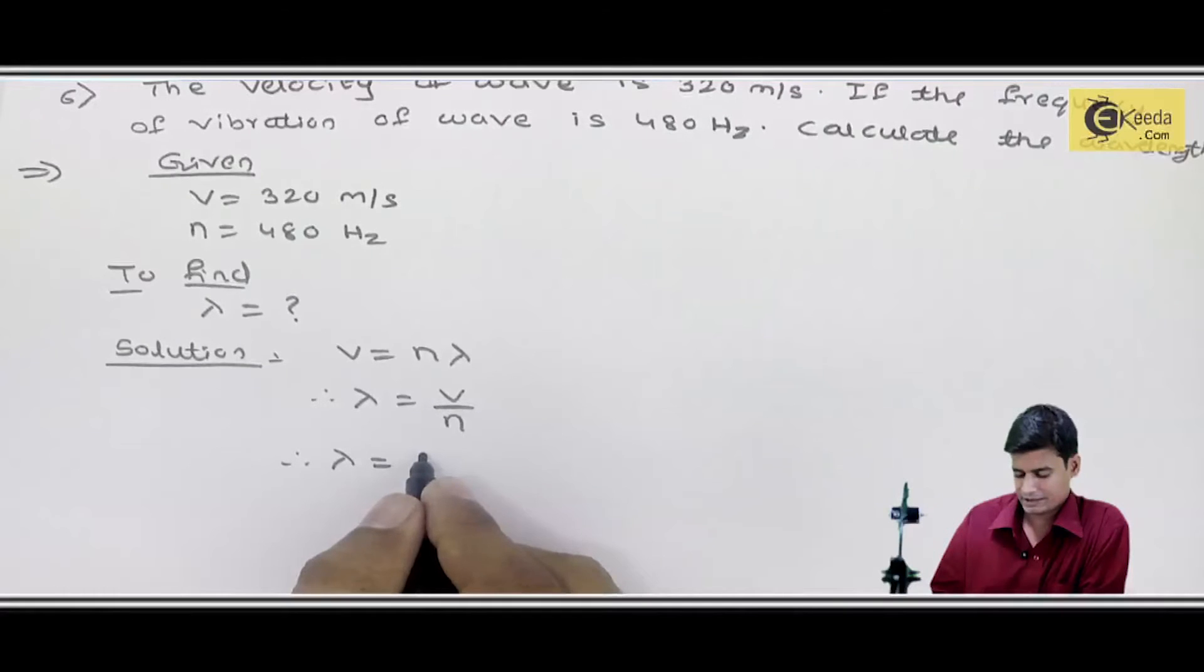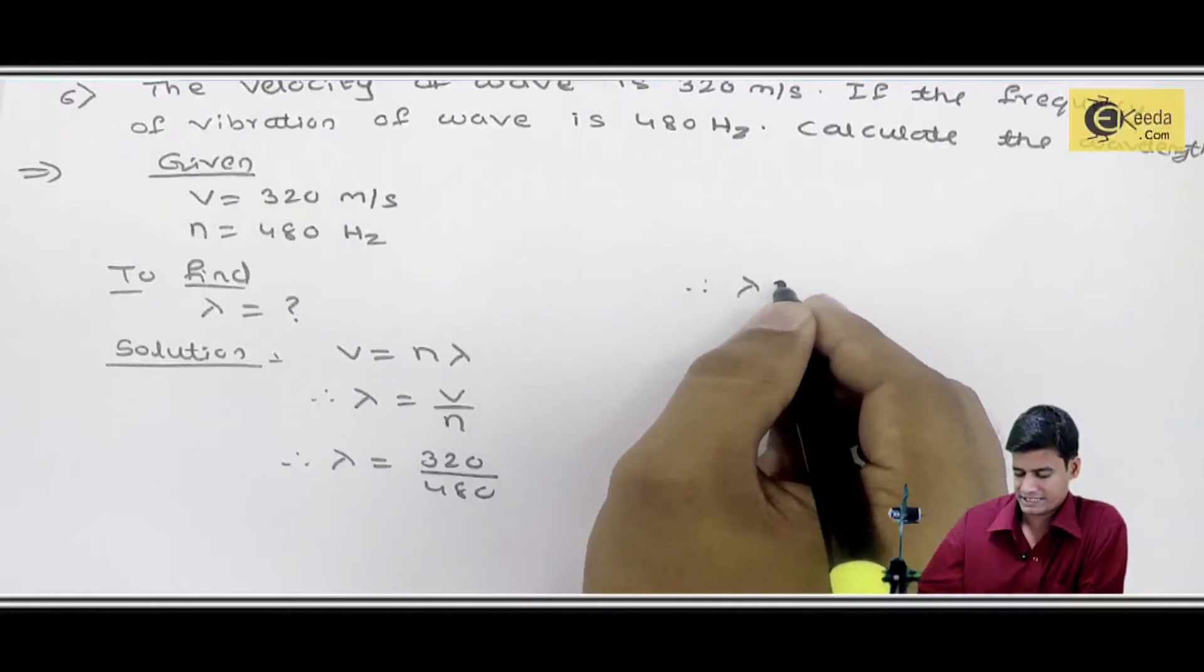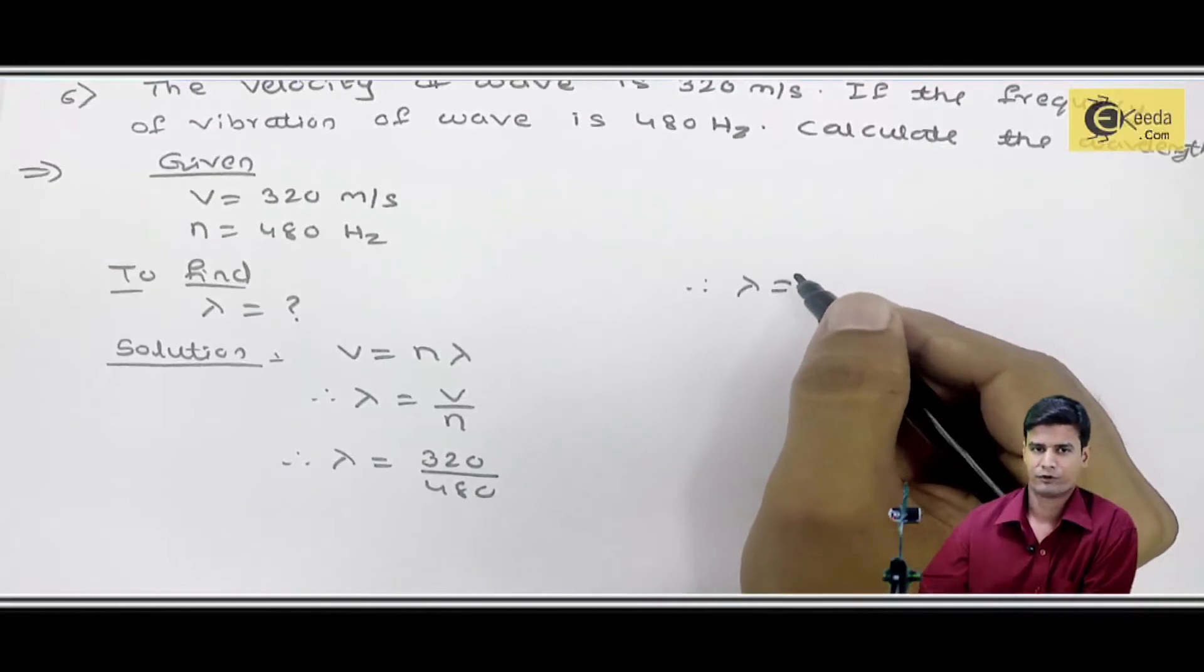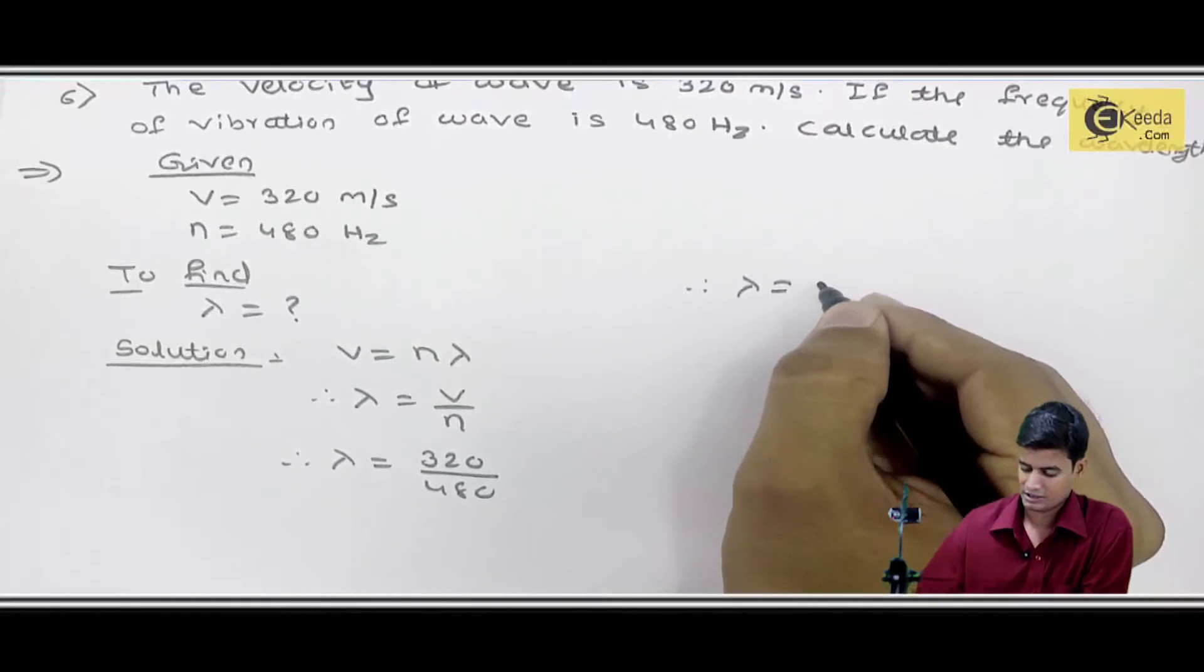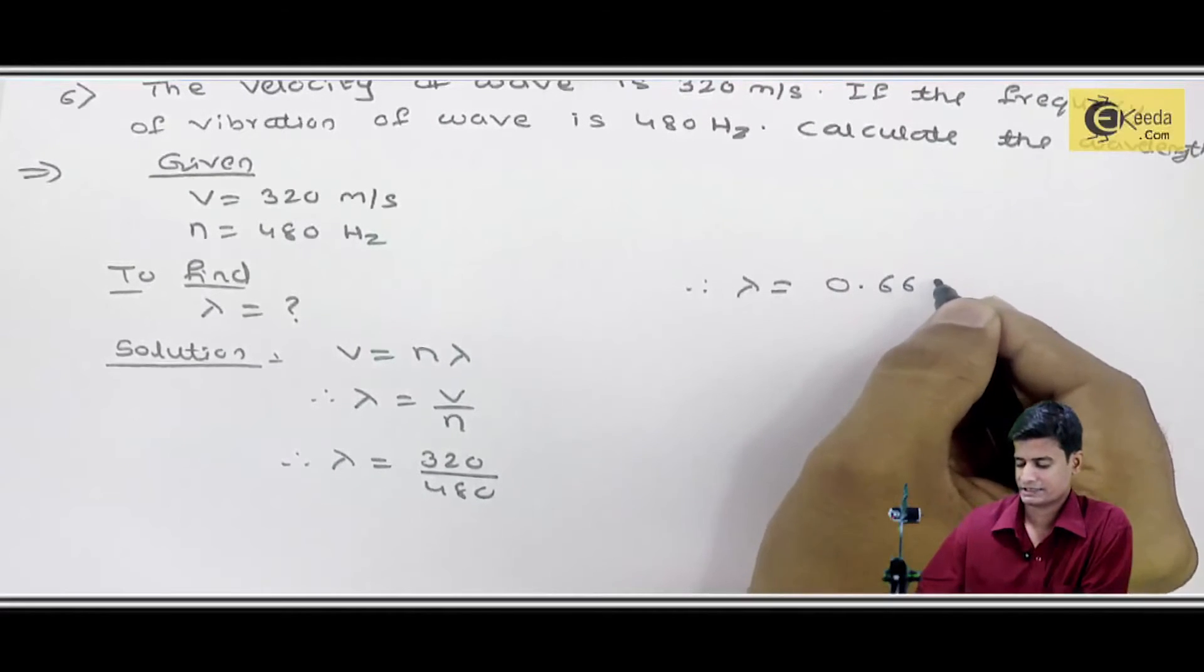V कितना given है मेरे पास 320 upon frequency 480. इनको अगर divide करता हूं तो 320 upon 480. Calculator में put करो values, 320 upon 480 इसका answer आता है 0.666.